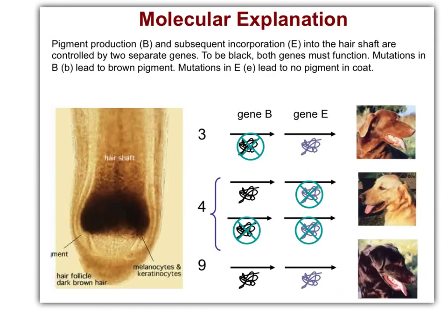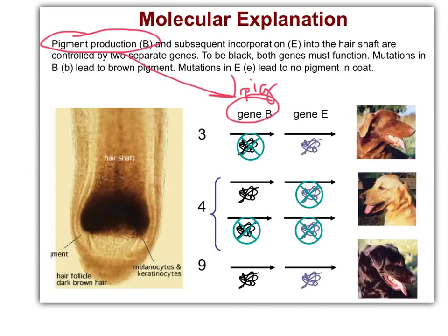How does recessive epistasis work mechanistically? The two genes contribute to coat color in dogs because one controls actual pigment production and the other controls putting the pigment into the hair shaft. Gene B is pigment production, and gene E is incorporating it into the shaft. If you're in the 9-category — you make dark pigment and you put it into the hair shaft — you get black.